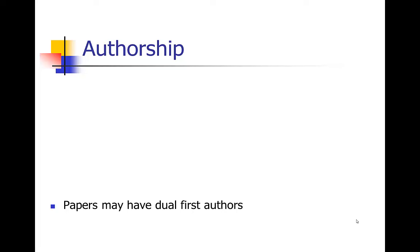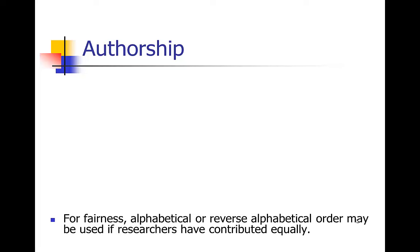Occasionally you might have two graduate students who both did equal work, and you really want to give them both equal credit — you can consider doing dual first authors. Sometimes you have a clear first author and last author, but a number of people who made substantial contributions and contributed equally in between. For fairness, you could consider alphabetical or reverse alphabetical order. In one series of studies, we put co-investigators in alphabetical order on the first paper and reverse alphabetical on the second paper. Large international working groups with hundreds of authors can be cited as a group.